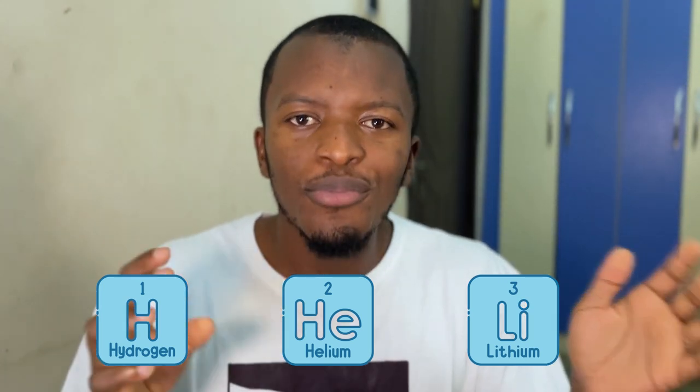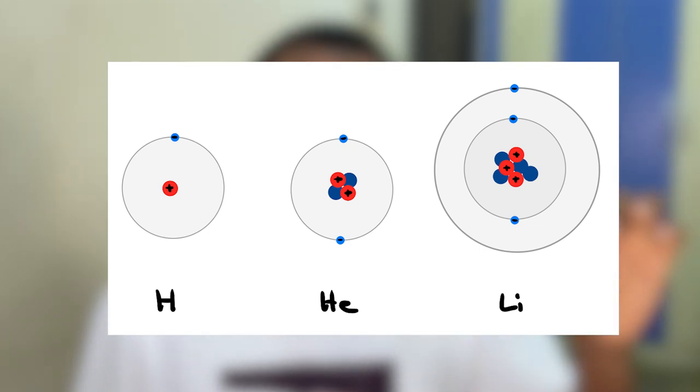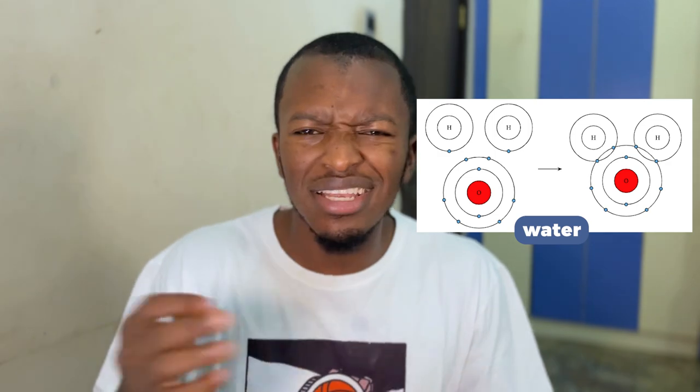For example, in chemistry one of the first topics taught is the periodic table, where you're familiarized with the elements. Hydrogen has one electron, helium has two, lithium has three — these electrons are arranged in a particular manner called electronic configuration. Then a few weeks later they teach you bonding, which is when elements come together through their electronic configuration to attain stability.